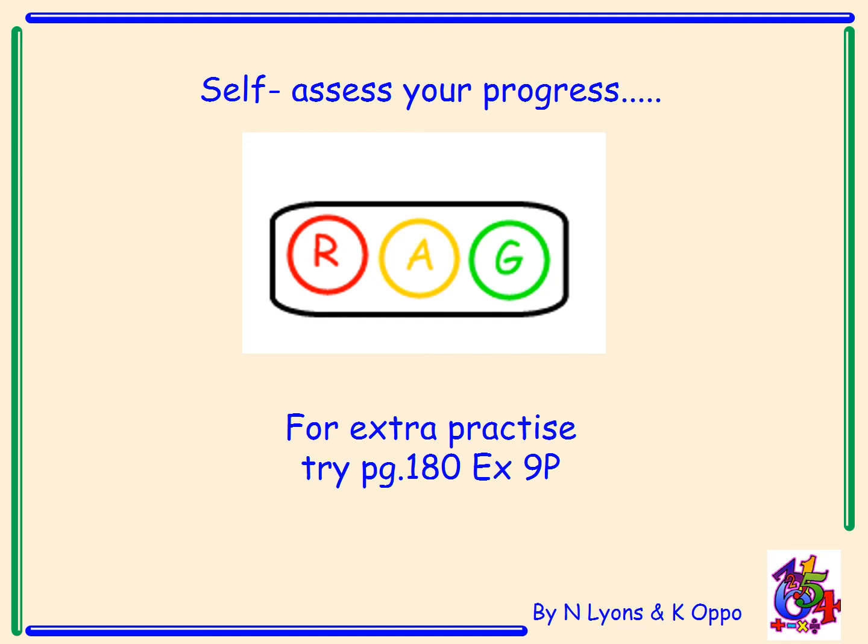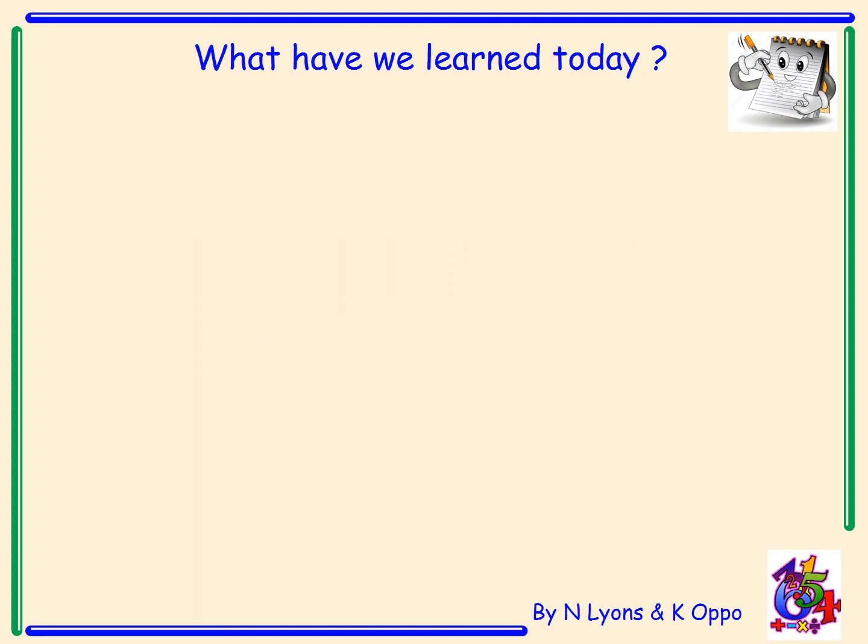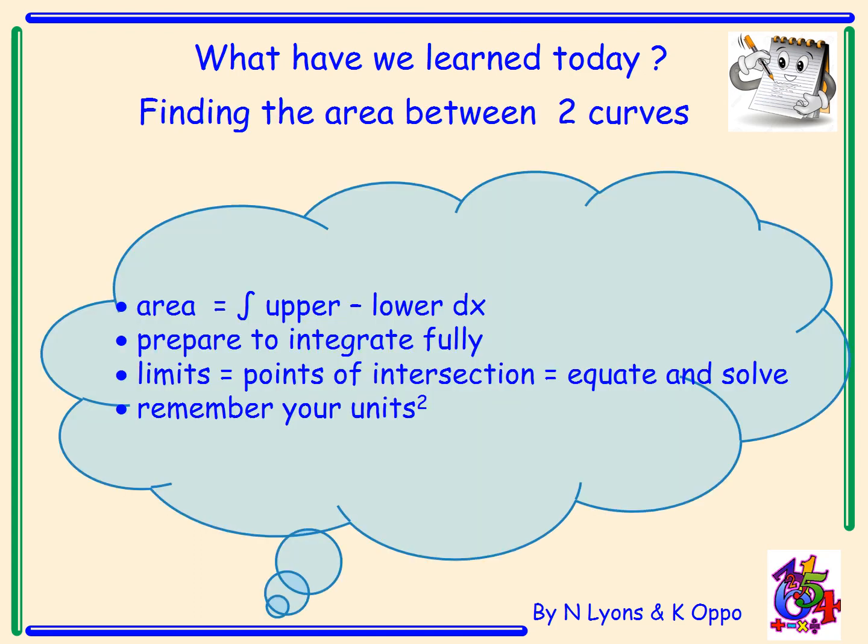Self-assess your progress. For extra practice, try page 180, exercise 9P. So what have we learned today? Well, we've learned how to find the area between two curves. So the area equals integral of the upper curve minus the lower curve with respect to x. We prepare to integrate fully. Limits are the points of intersection of the two curves. To find them, we have to equate and solve. And also remember to simplify fully your answer and write square units.